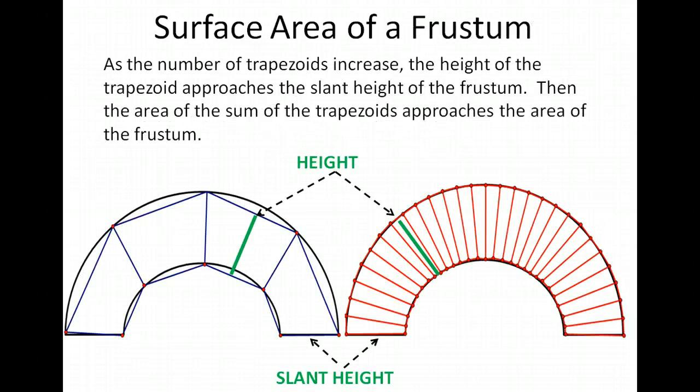On the left we have four trapezoids that are estimating the area of the frustum. As we increase the number of trapezoids, we will get a better estimate for the surface area of the frustum.